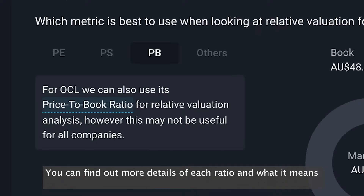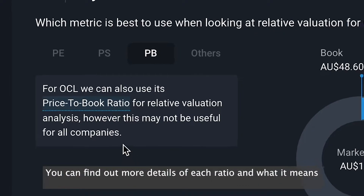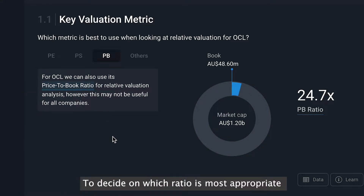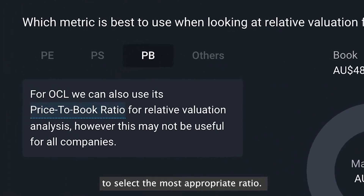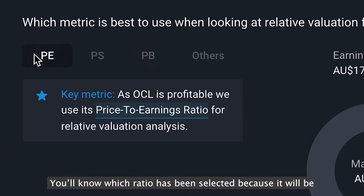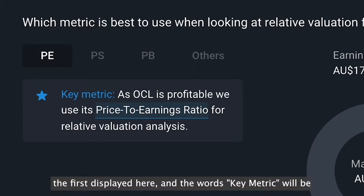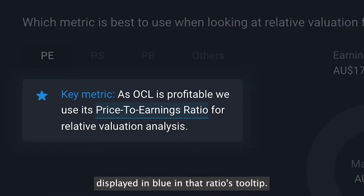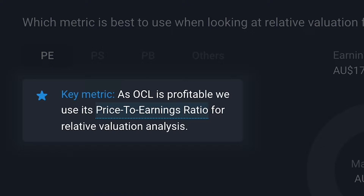You can find out more details of each ratio and what it means by hovering over the tooltip for each. To decide on which ratio is most appropriate for the stock we're looking at, we use an algorithm to select the most appropriate ratio. You'll know which ratio has been selected because it will be the first displayed here, and the words 'key metric' will be displayed in blue on that ratio's tooltip.